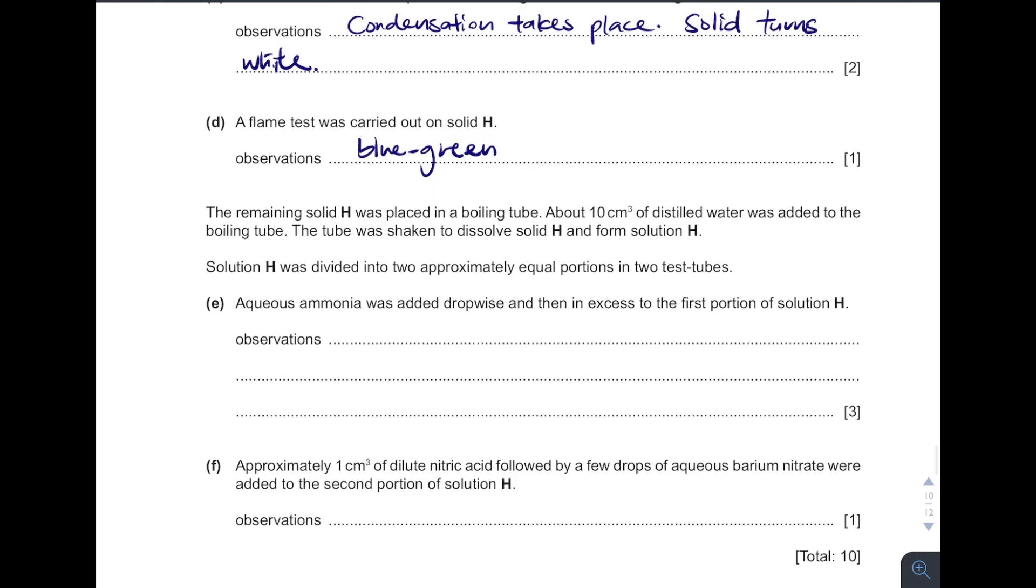Next one. See, added with ammonia and then in excess. We are now testing for copper. So the very first observation, blue precipitate is formed and then it will get dissolved in excess and dissolve in excess to form dark blue solution. That's it, three marks.